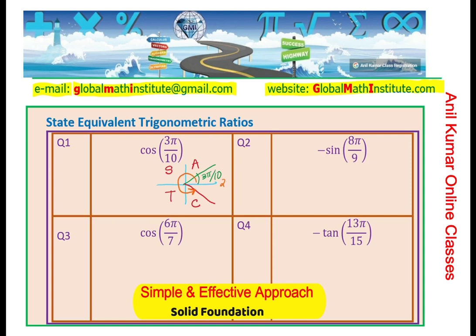So if I say counter-clockwise is positive, this becomes my angle. This becomes my angle. Acute angle being 3π/10, total as you know, 2π will be 20π/10, correct? 3 less will be 17.